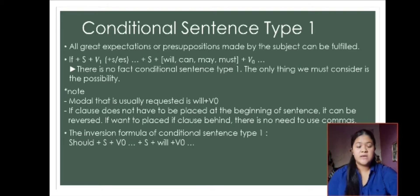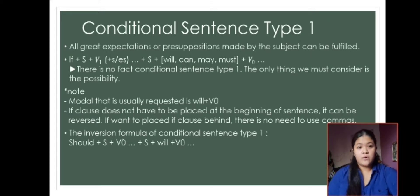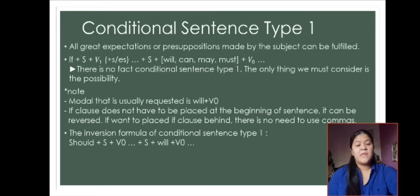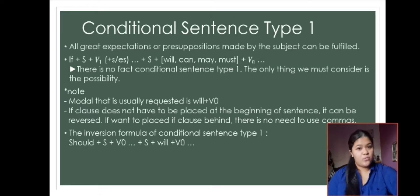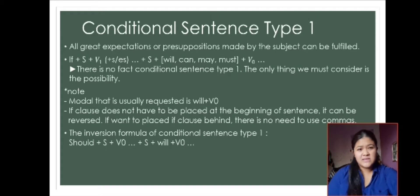The main clause uses a modal such as will, can, may, or must, plus verb 0 or verb 1. In conditional sentence type 1, there is no fact — it only considers the possibility.